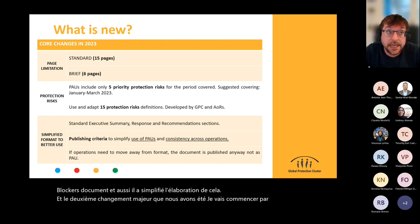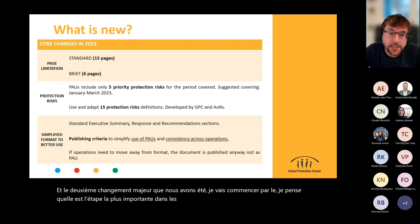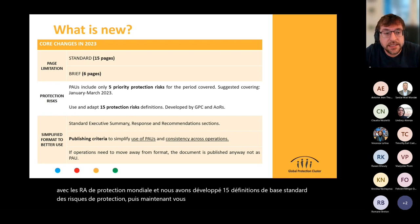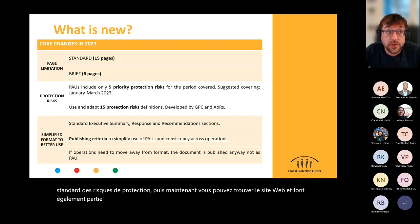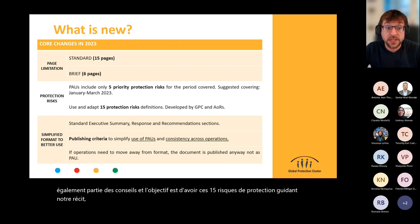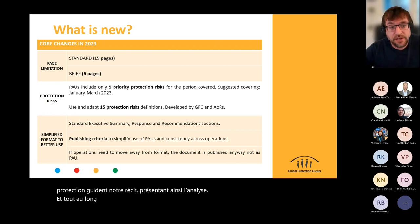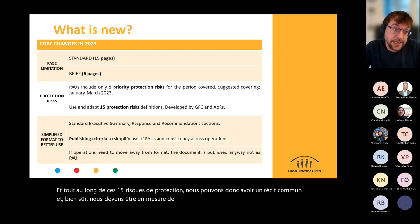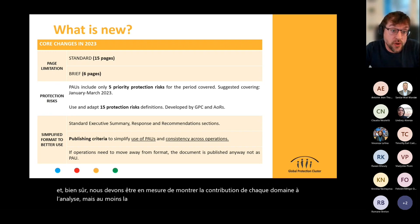The second major change — and I think this is the most important step — is that over the last four months we worked together with the Global Protection AORs and developed 15 standard core definitions of protection risks. You can find them on the website and they're also part of the guidance. The goal is to have those 15 protection risks guiding our narrative, presenting the analysis throughout these 15 protection risks so we can have a common framework — with a more or less consolidated presentation across operations.